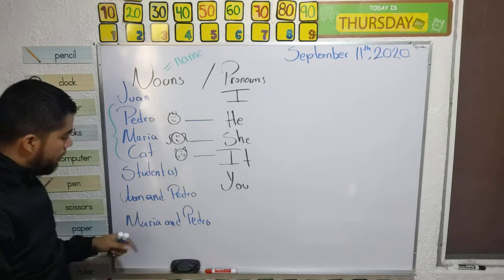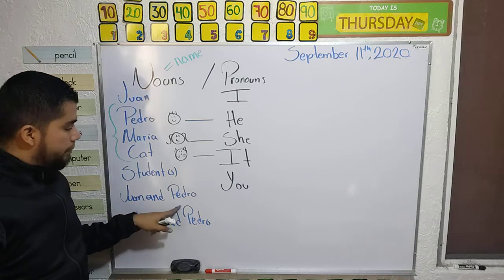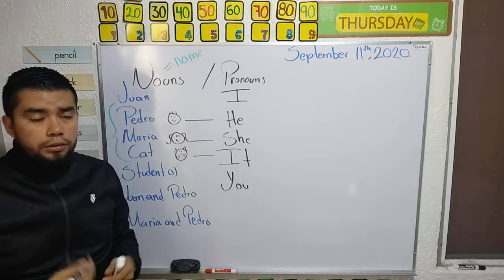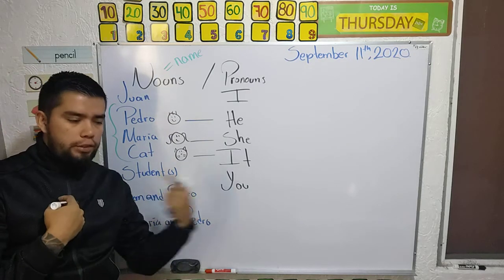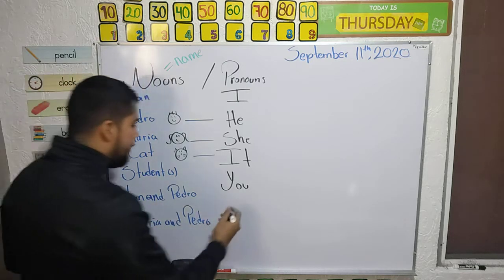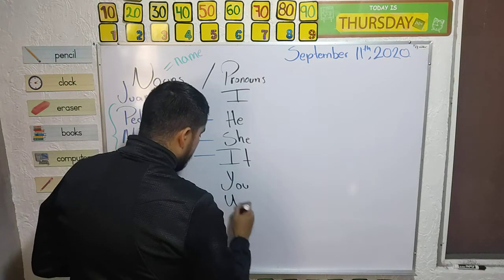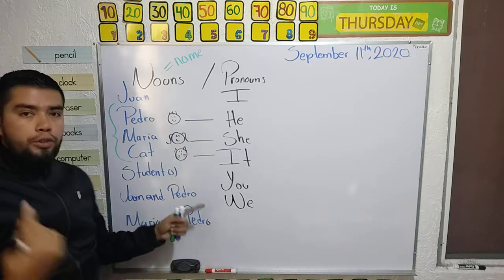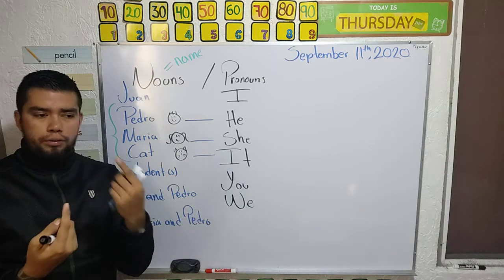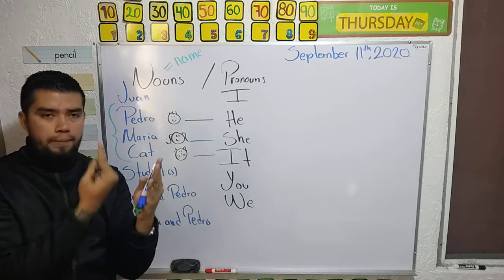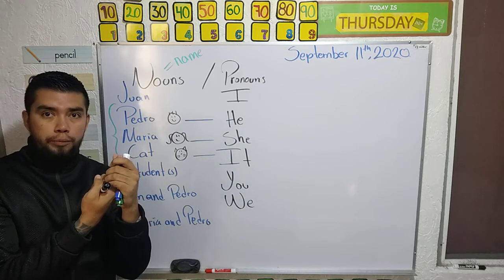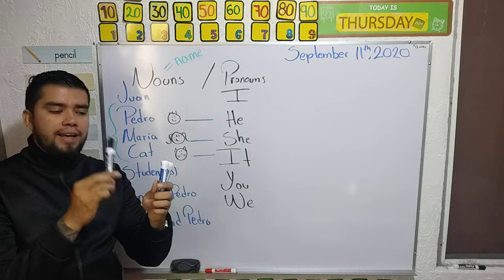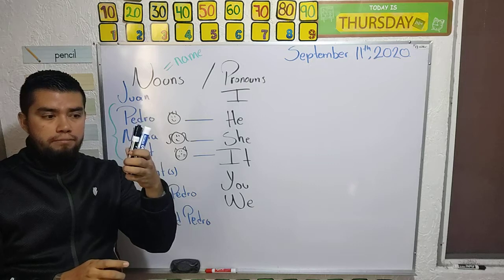Now, Juan and Pedro — I am Juan and then we have Pedro, so it's plural, but I am part of the group. So when it's like that, we're going to use 'we'. Because you and another person, or two, three, four, five more people, but you are part of the group — that's 'we'.